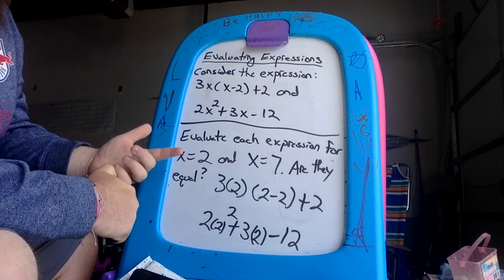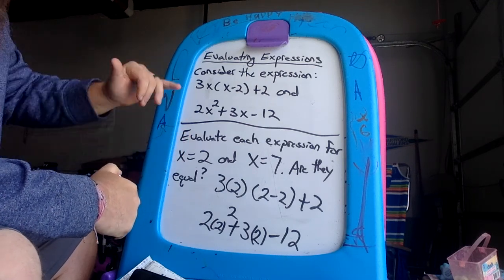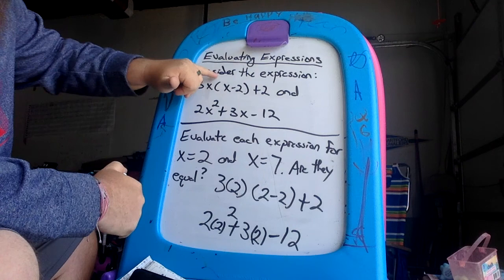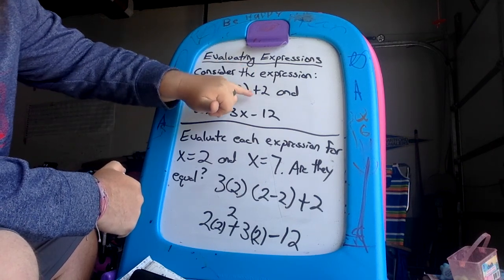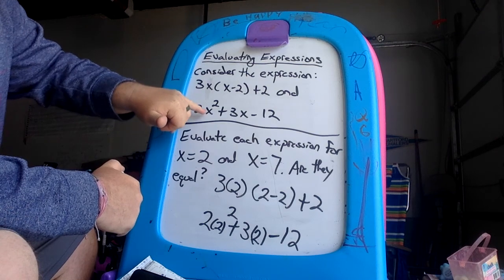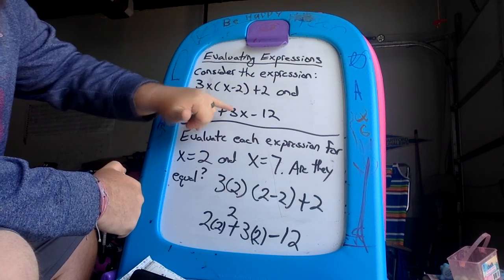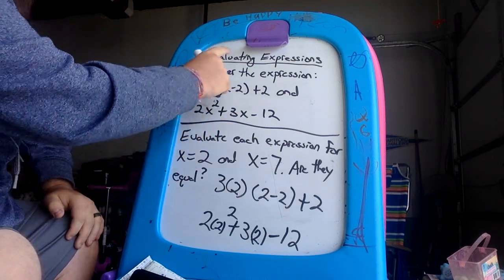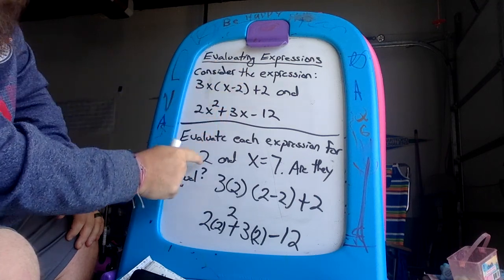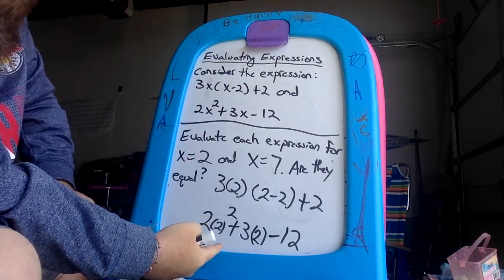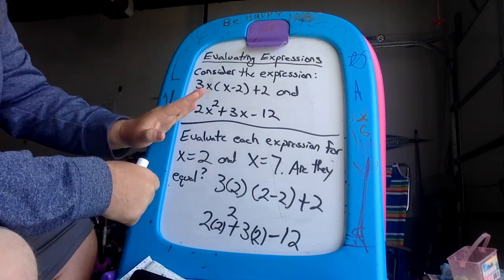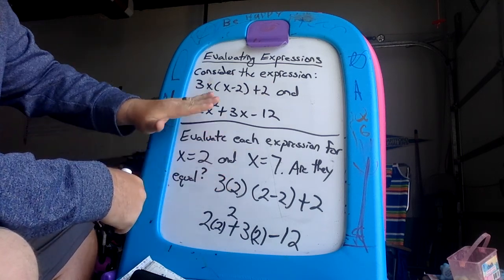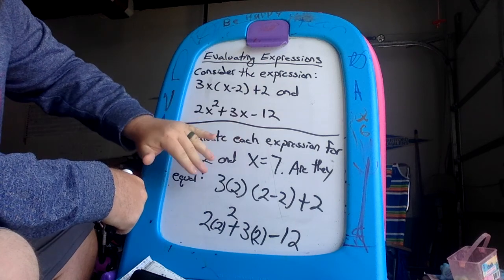So again just to retrace and work backwards, it says evaluating the expressions, consider the expression 3x parentheses x minus 2 plus 2, and then 2x squared plus 3x minus 12. I want you to substitute all the unknown numbers for x for 2, rewrite the equation and I want you to solve and see if they're equal.